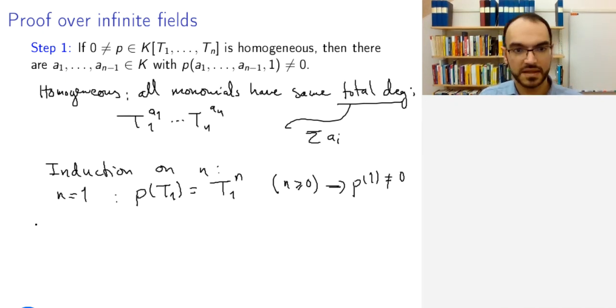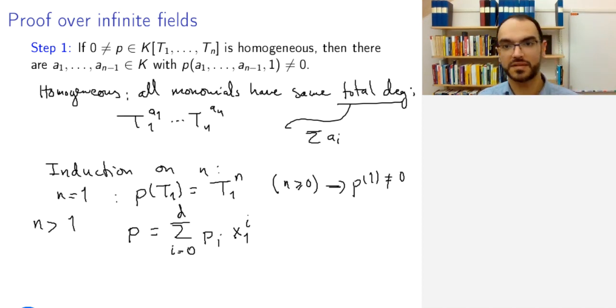Now, if n is greater than one, then take P and write P as a polynomial with the first coordinate singled out. So write P as a polynomial, Pi times X1 to the power i, i goes from zero to some number d.